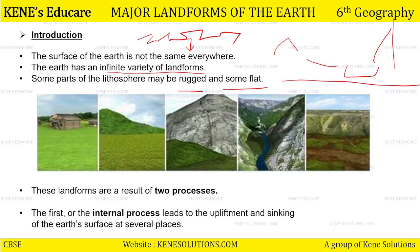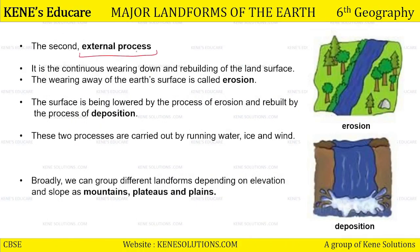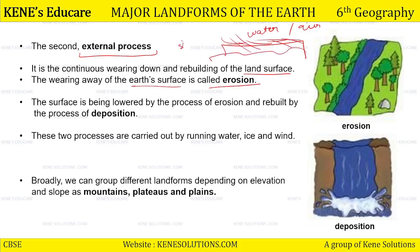These landforms are a result of two processes. The first is the internal process — jisay hum internal process keate hai. It leads to the upliftment and sinking of the earth surface at several places. Ya toh landform upar uthra hooga ya toh landform neechai ki tiraf sink kara hooga. Second is the external process. It is the continuous wearing down and rebuilding of the land surface. The wearing away of the earth surface is called erosion. Agar yeh koi landmass hai jis mein water ya air apne force ki wajay se erode kerti rheti hai, iske material ko, aur land surface ka shape badal jai — isse hum kahenge erosion.